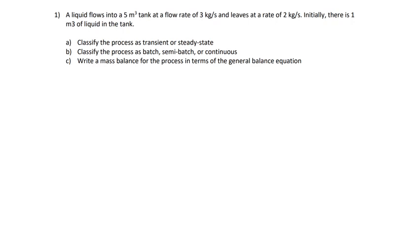Tutorial 3, question 1. A liquid flows into a 5 meter cube tank at a flow rate of 3 kg per second and leaves at a rate of 2 kg per second. Initially, there is 1 meter cube of liquid in the tank. Question A: Is the process transient or steady state? Question B: Is it batch, semi-batch, or continuous process? And C: Write a mass balance for the process in terms of the general balance equation.